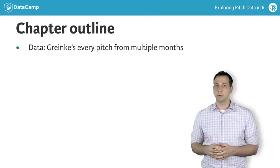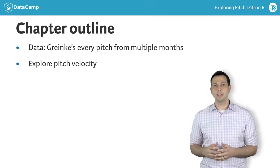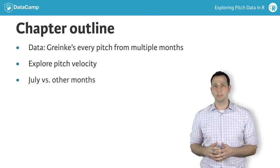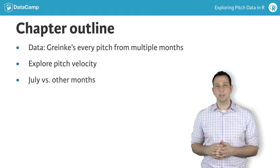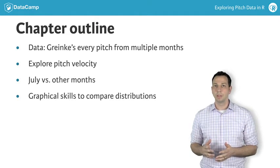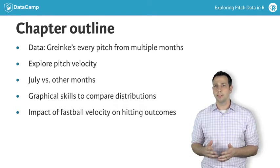You'll begin in this chapter by exploring pitch velocity. By the end of the chapter, you'll have done enough exploratory analysis to answer the question of whether Granke's fastball velocity was higher in July relative to the other months he pitched in 2015. Throughout the exercises in this chapter, you'll gradually develop graphical skills to make colorful histograms to meaningfully compare velocity distributions. Finally, note that you'll return to some of that analysis in the final chapter of the course, where you'll evaluate whether changes in fastball velocity had any impact on hitting outcomes.